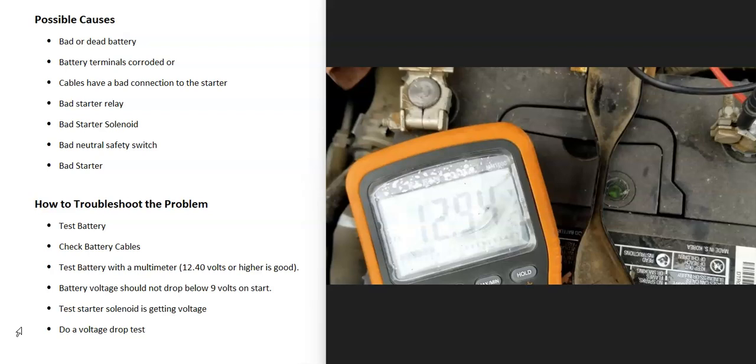You can also test the battery when you go to start it and if it drops below nine volts. And so with the multimeter connected, if you have somebody to help you, have them turn the key and the battery voltage will drop. But if it drops below nine volts, then that's not enough for that starter to usually work. And at that point, be sure to take the battery in and get it tested.